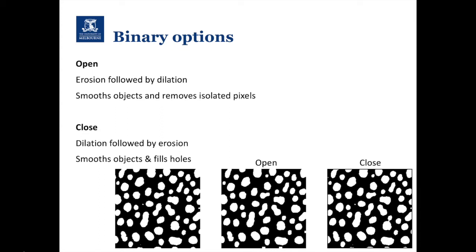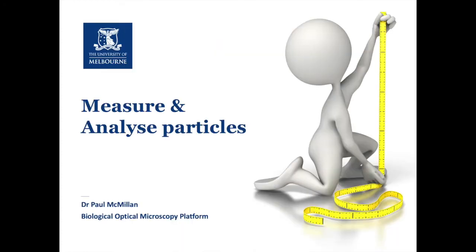Open smooths objects and removes isolated pixels — so a little isolated pixel in the image will be gone in the final result, which is useful for getting rid of smaller objects we don't want to analyze. Close also smooths objects but additionally fills gaps, so if two objects should be part of one, you can use that to join them back together. We're here because we want to learn how to measure and read out quantitative analysis. The tools you'll use most in Fiji for that are the Measure or Analyze Particles tools.